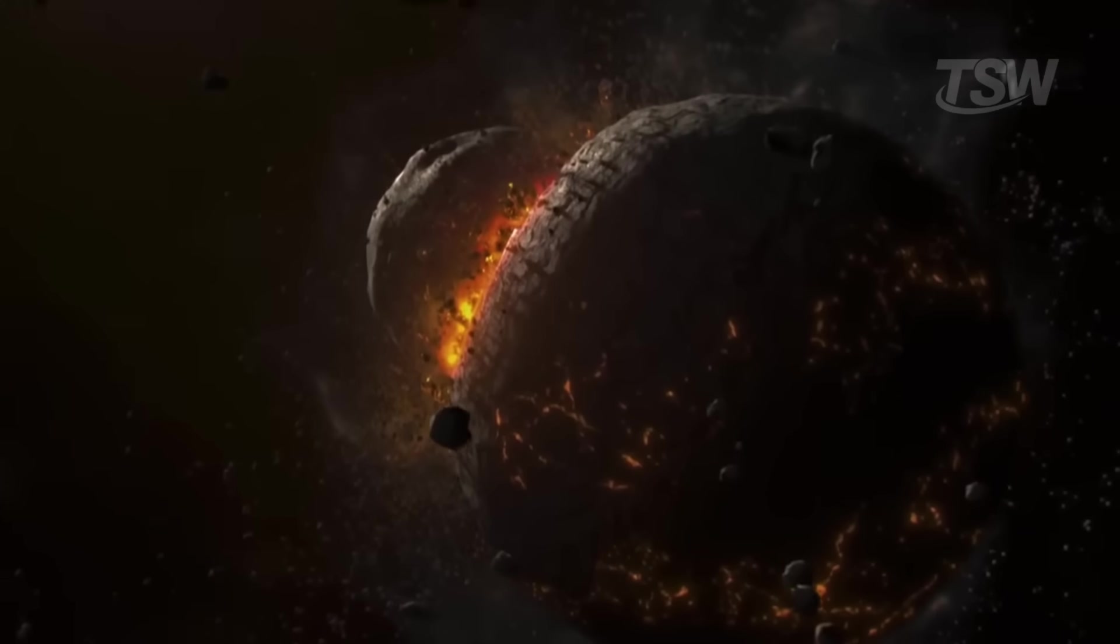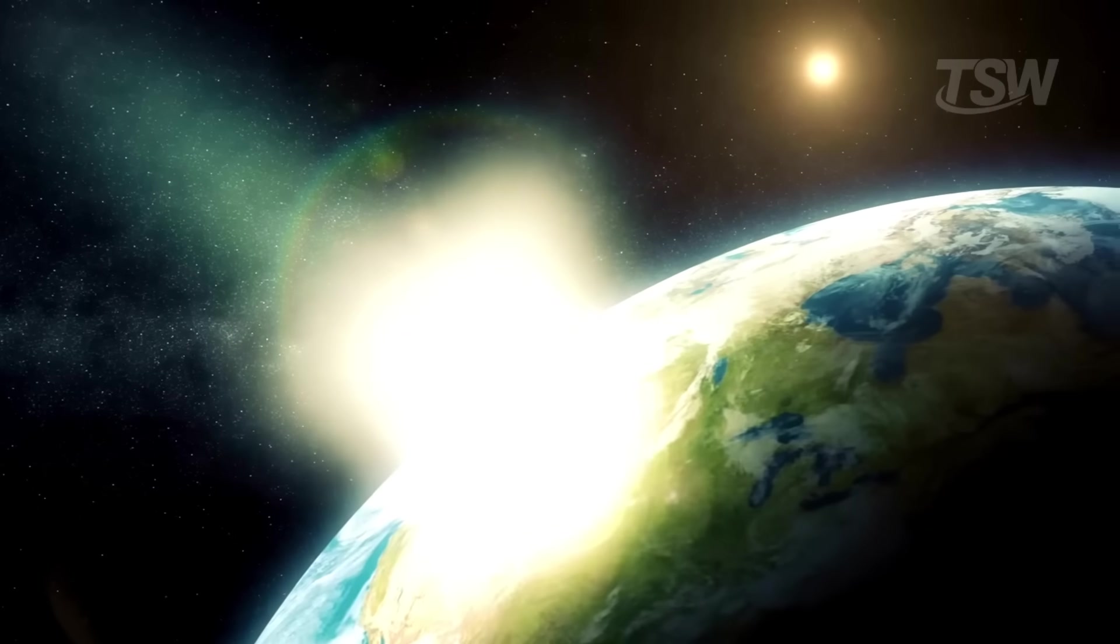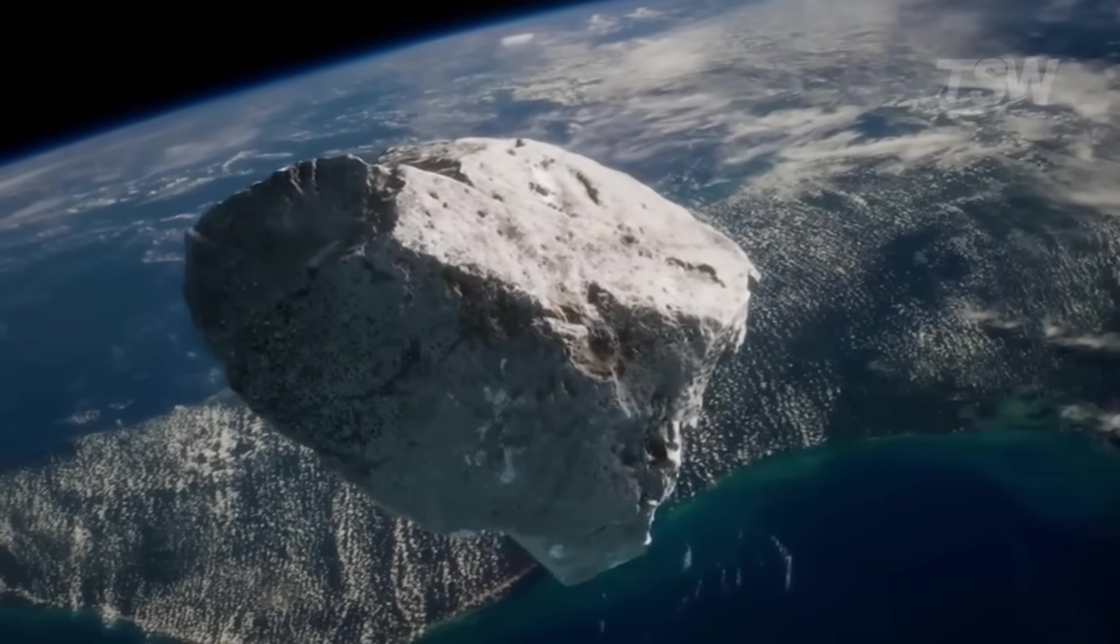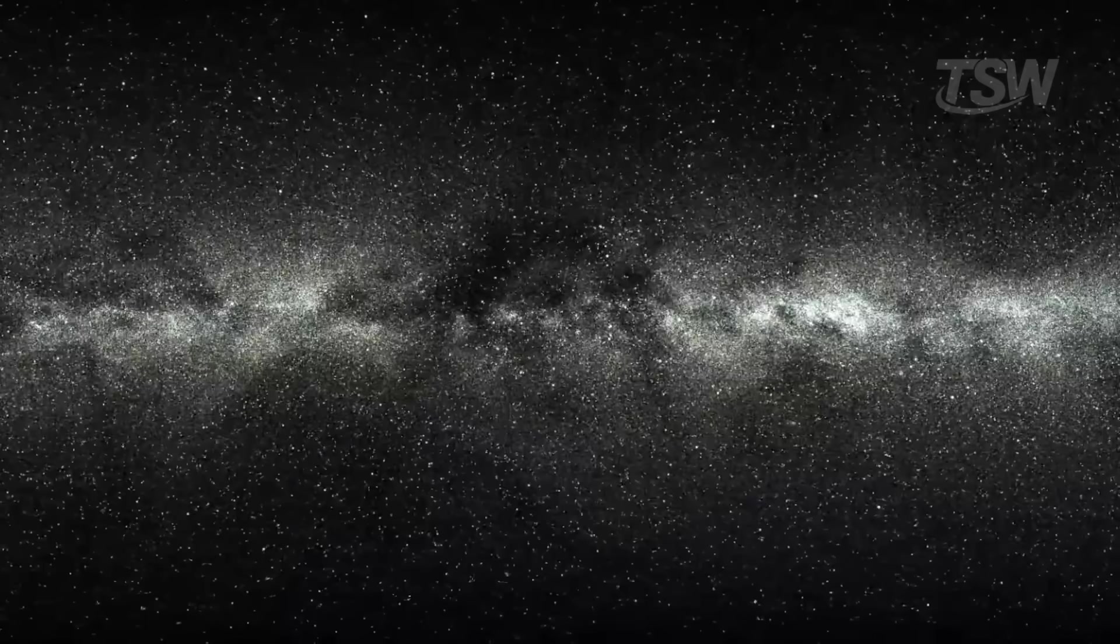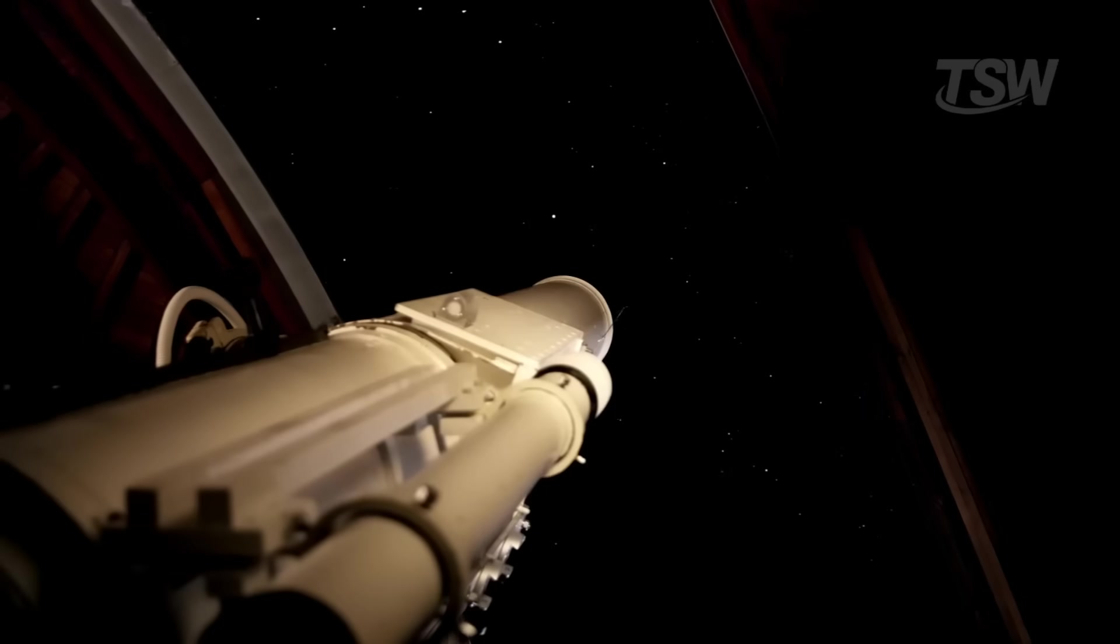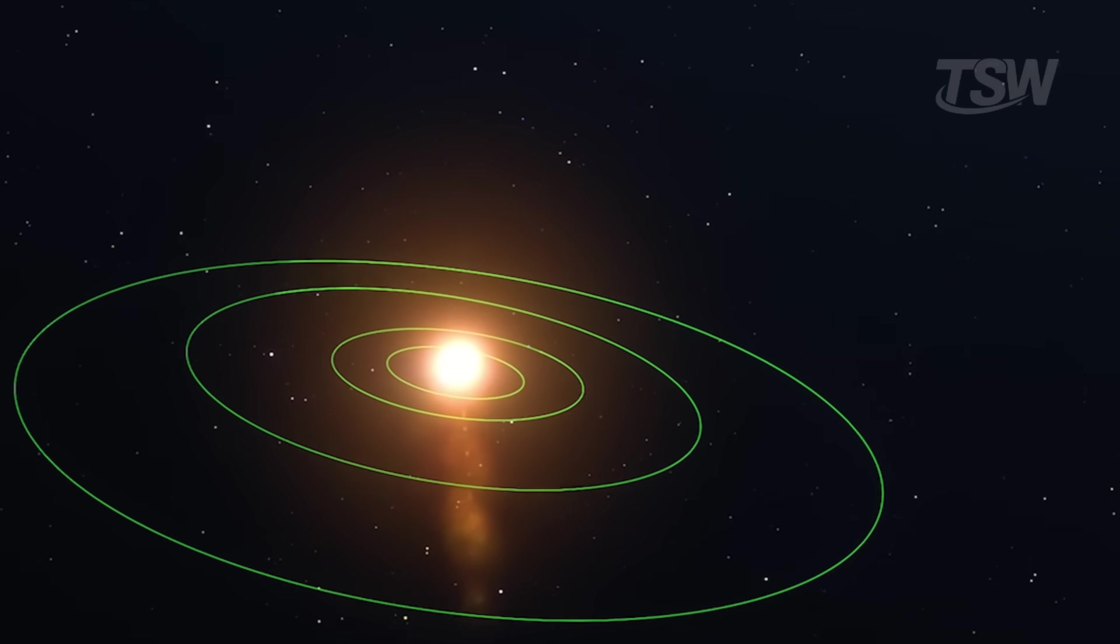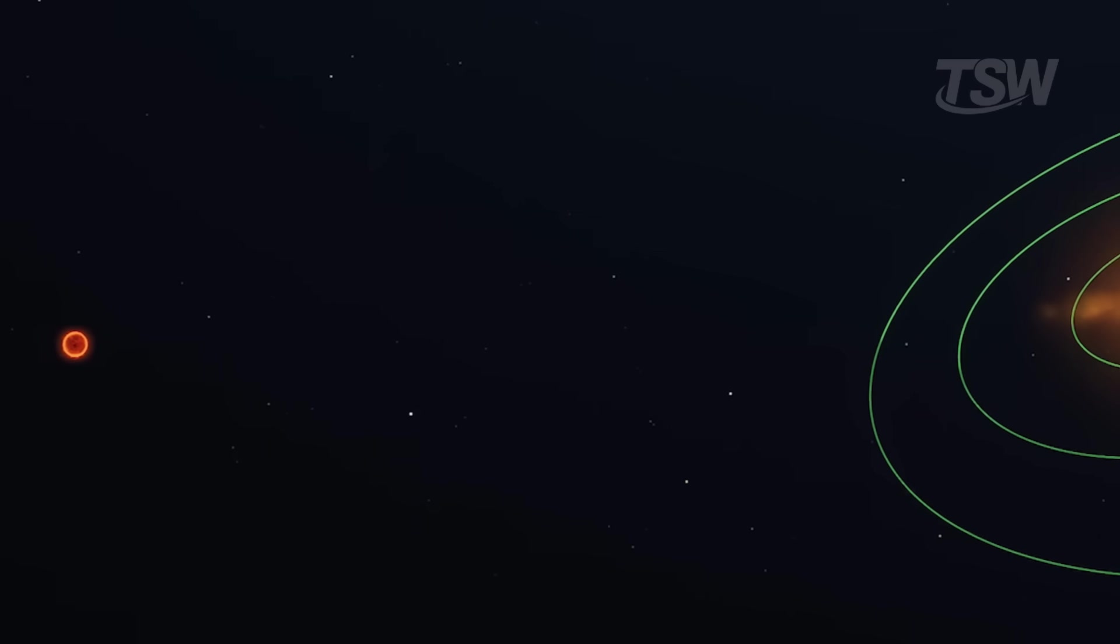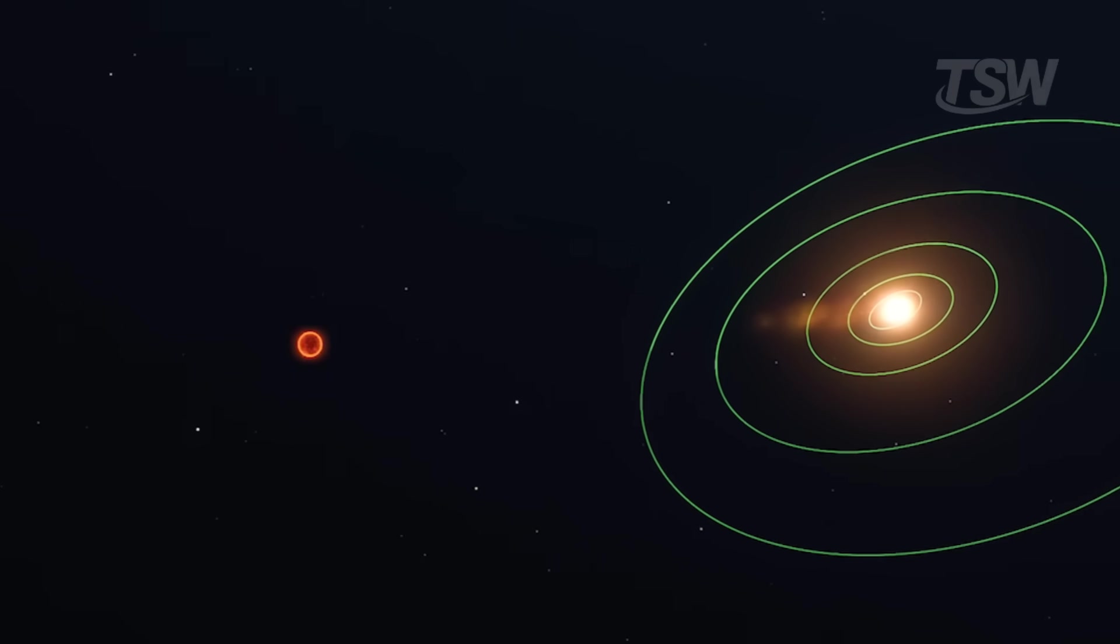It's also important to remember that our planet's history includes impacts. Some small, others capable of reshaping entire ecosystems. The difference is that today we better understand where these threats can come from, and we have technology to systematically monitor the sky. Catalogs of near-Earth objects grow year by year. Telescopes sweep the firmament for points moving against the stellar background. Space missions test ways to deflect asteroids. In other words, if Gliese 710's visit seeds a larger crop of comets far in the future, our descendants still won't be blind.